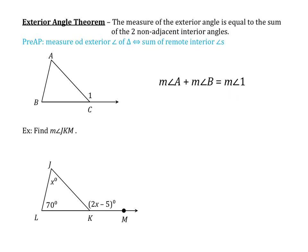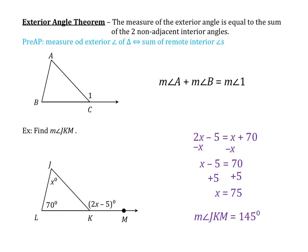Let's try an example with the exterior angle theorem. We have a triangle and we need to find the measure of angle JKM. Angle JKM is the exterior angle, so by the exterior angle theorem, 2X minus 5 equals the sum of the non-adjacent angles X and 70. So: 2X minus 5 equals X plus 70. Subtracting X from both sides gives X minus 5 equals 70. Adding 5 to both sides gives X equals 75. Plugging back in: 2 times 75 minus 5 gives the measure of angle JKM equals 145 degrees.